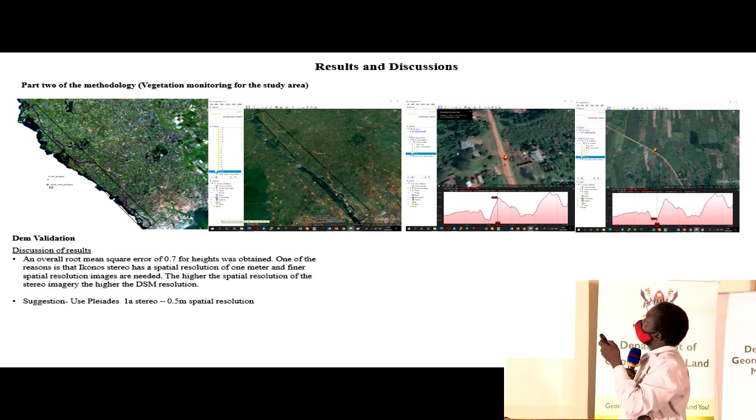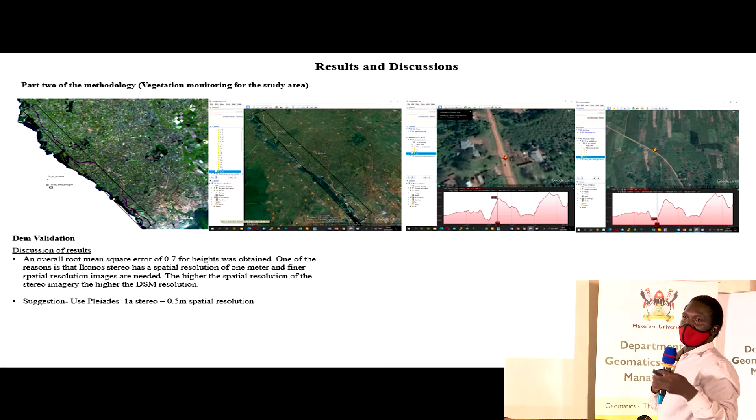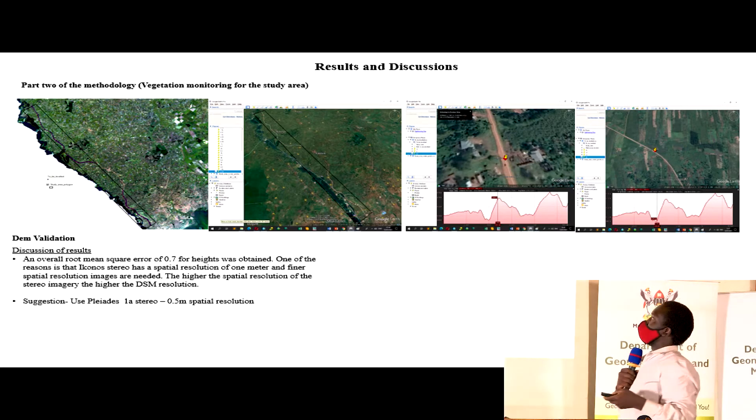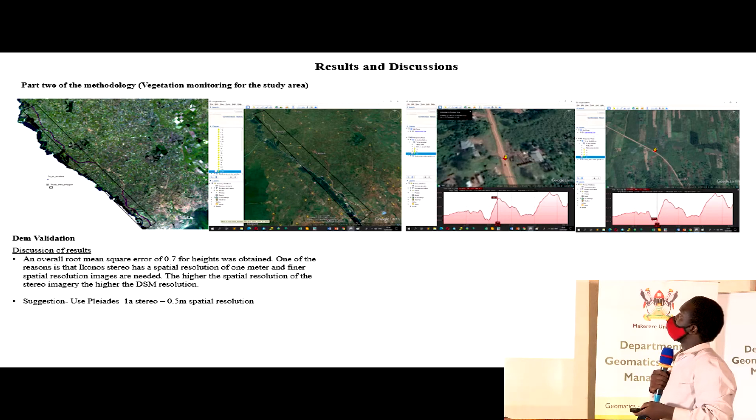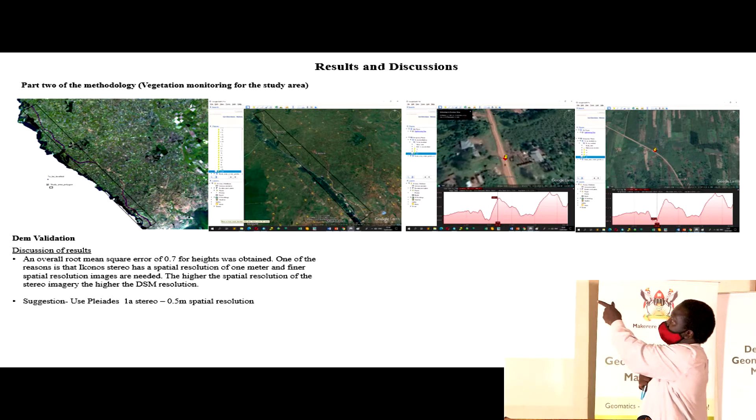After getting the digital surface model, I had to find out whether it was accurate. That is my study area with true color composite. I found a road there and took it to Google Earth Pro.